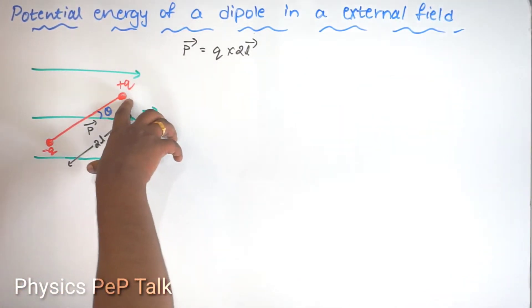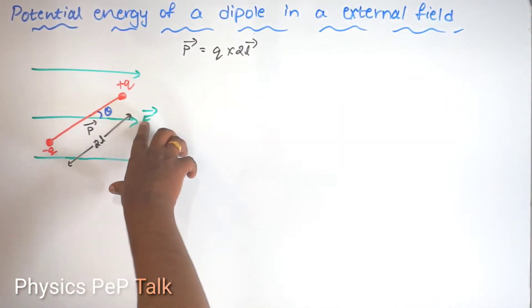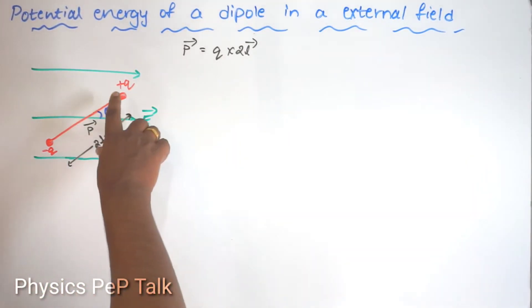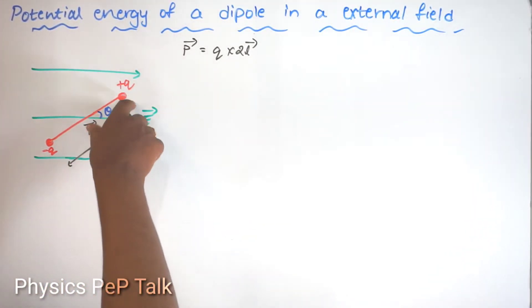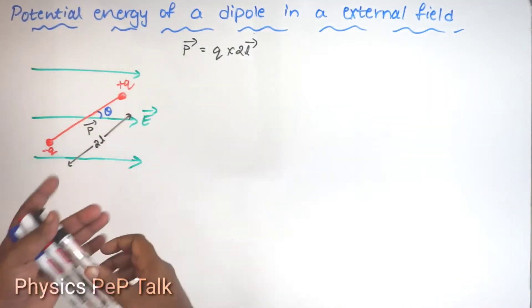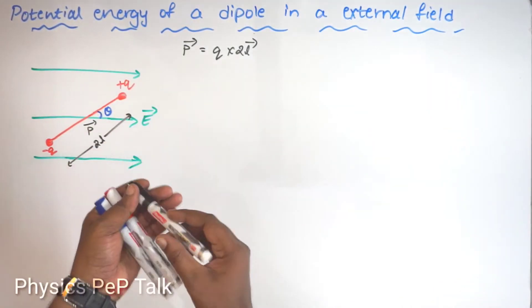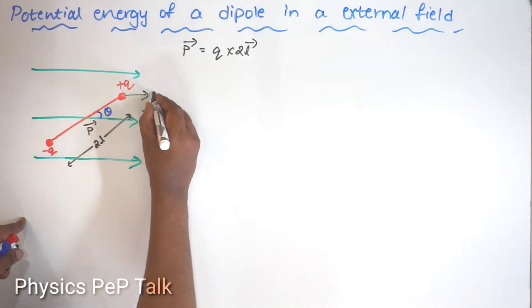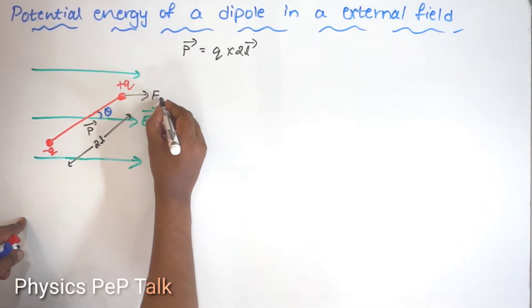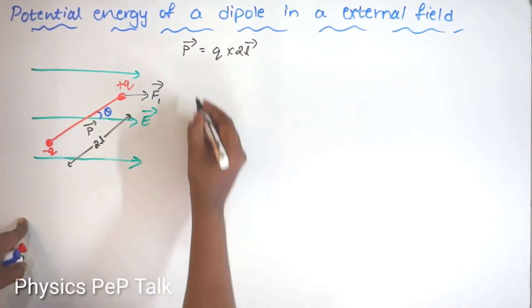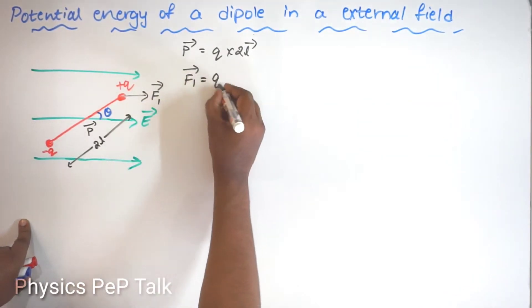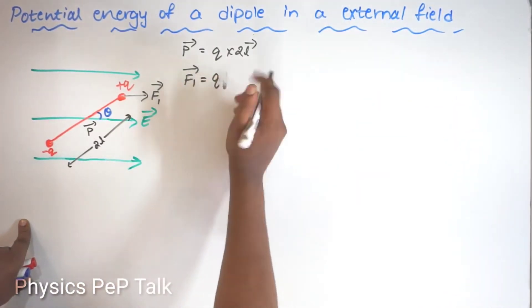When I place a positive charge in an external electric field, it will experience a force. For a positive charge, the force will be in the direction of the electric field itself. I will call that force F1, so F1 = Q × E.